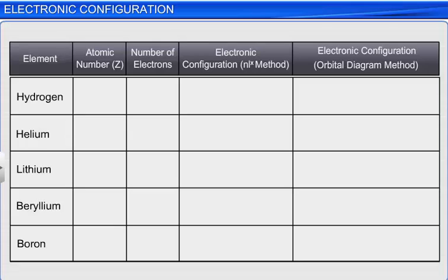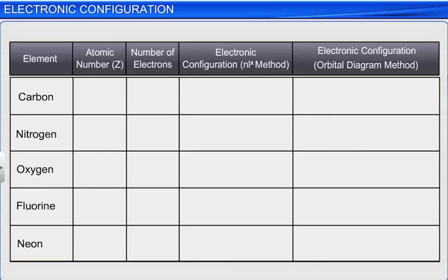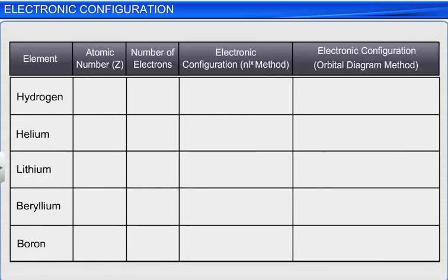Now let's discuss the electronic configuration of the first ten elements: Hydrogen, Helium, Lithium, Beryllium, Boron, Carbon, Nitrogen, Oxygen, Fluorine, and Neon. Hydrogen has only one electron, which must be filled in the orbital of lowest energy, that is 1s.